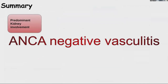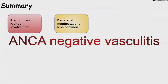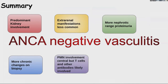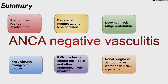To summarize: ANCA-negative vasculitis has predominant kidney involvement. Extra-renal manifestations were less common in most studies. These patients had more proteinuria including nephrotic-range proteinuria compared to seropositive ANCA vasculitis. Most studies showed more chronic changes on biopsy, which likely explains their worse outcomes in Asian cohorts. Polymorphonuclear cells are central to pathogenesis, but T cells and other antibodies are likely also involved. Renal prognosis was worse in Asian cohorts, but in other cohorts was comparable to ANCA-positive patients.